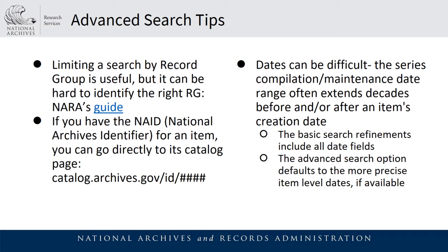One helpful tip I use all the time: if you have the NAID — the National Archives Identifier — for an item, you can go directly to its catalog page at catalog.archives.gov/id/ followed by the NAID.